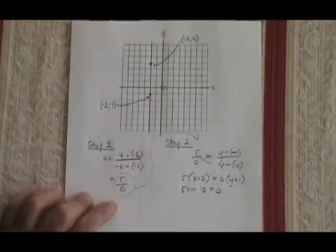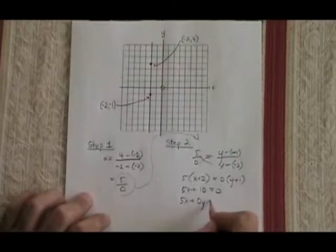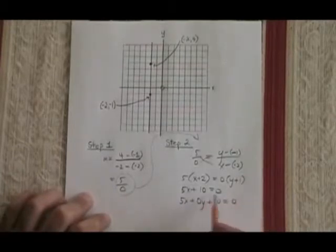At this point, I'm finished. I have an equation in the form ax plus by plus c equals 0, and if I want, I can write it like this: 5x plus 0y plus 10 equals 0. Either of these are valid, correct answers.